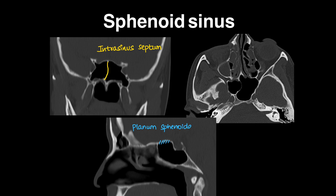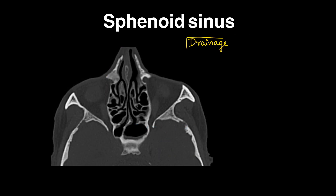Above the sphenoid sinus is the pituitary fossa, which houses the pituitary gland. Anterior to the sphenoid sinus is the optic canal, where the optic nerve passes through. The internal carotid artery is also a major relationship. The sphenoid sinus drains into the nasal cavity through the spheno-ethmoidal recess — the sphenoid and ethmoidal air cells drain together — through the sphenoid ostia.